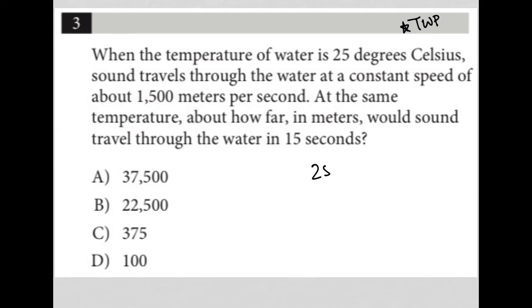So I'm going to write that down: 25 degrees Celsius gives me 1500 meters per second at the same temperature.